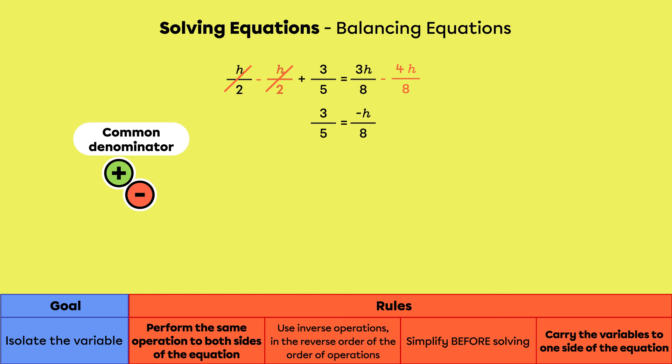The fraction negative h over 8 is really a division by 8. The inverse operation of a division is a multiplication. So we multiply by 8 on both sides of the equation. On the left side, we have 8 times 3 fifths, which gives 24 fifths. It can also be written as 4.8. On the right side, the 8s cancel each other out. Only negative h remains.